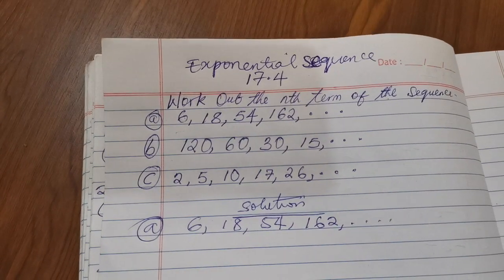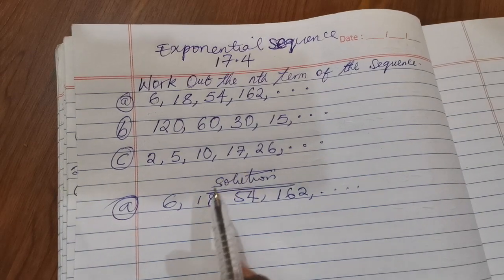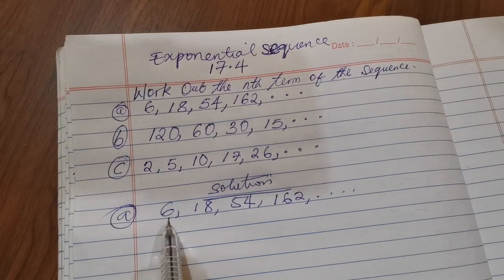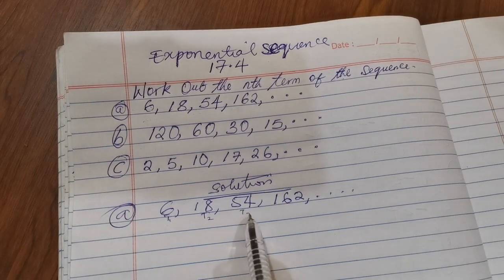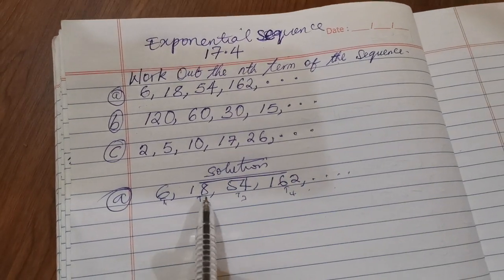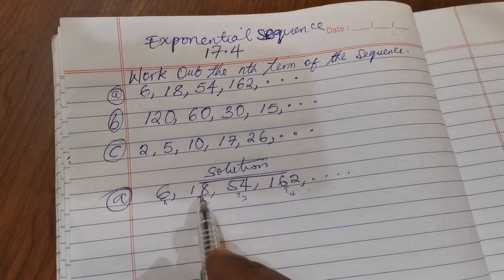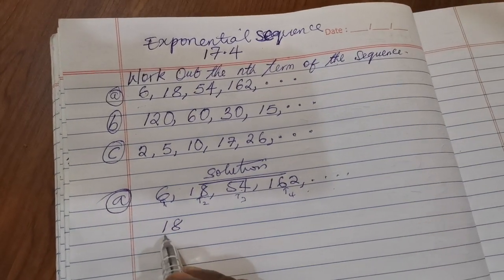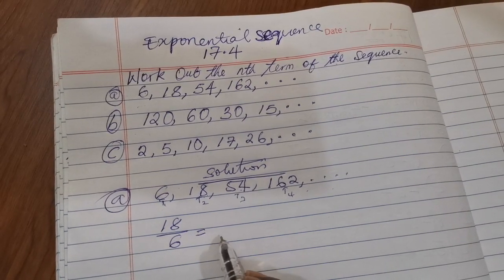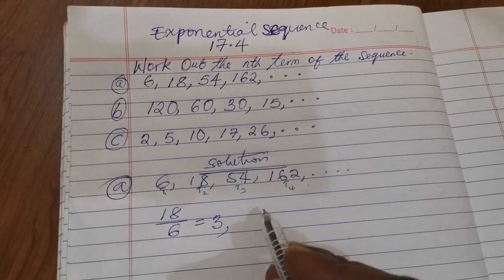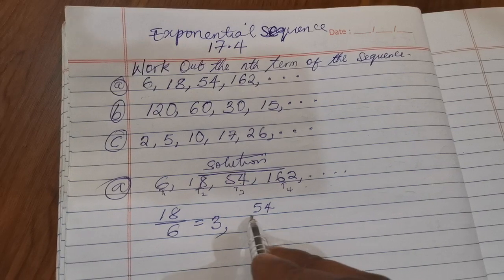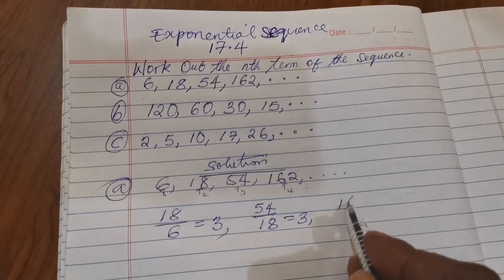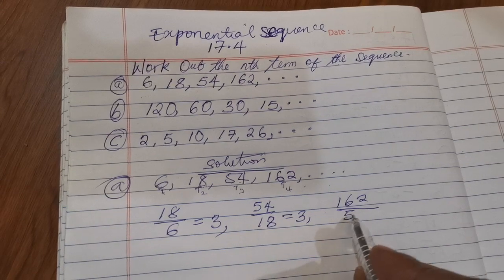To find the nth term of this exponential sequence, we label the terms t1, t2, t3, t4 and so on. Then we divide each term by the previous one. So 18 divided by 6 is 3, and we call that the common ratio.